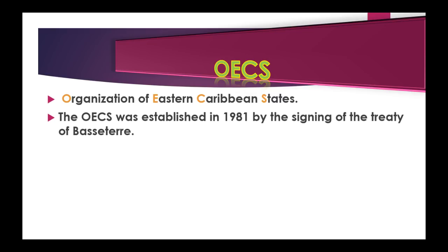The original members of the OECS are Antigua and Barbuda, Dominica, Grenada, Montserrat, Saint Kitts and Nevis, Saint Lucia, and Saint Vincent and the Grenadines. The British Virgin Islands joined as an associate member in 1984, and Anguilla joined as an associate member in 1995.